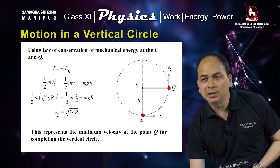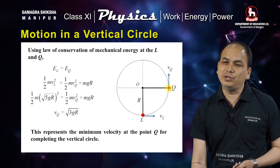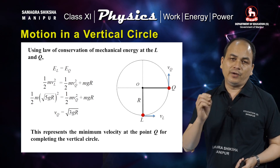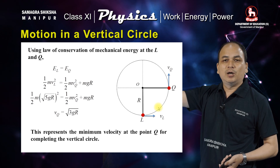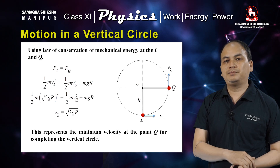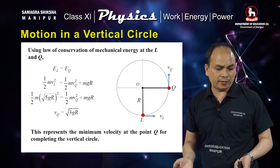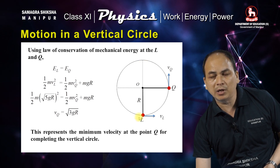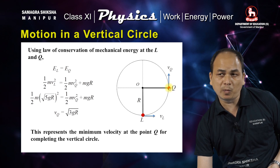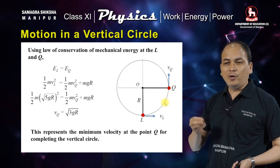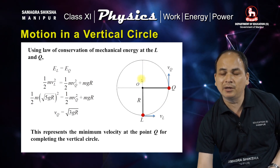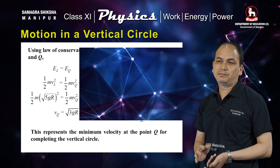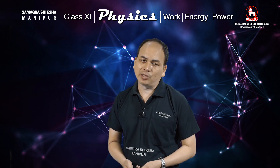These are the various minimum velocity values at different points of the vertical circle. The key relationship is derived using minimum tension equal to zero and conservation of mechanical energy at each point. Thank you very much.